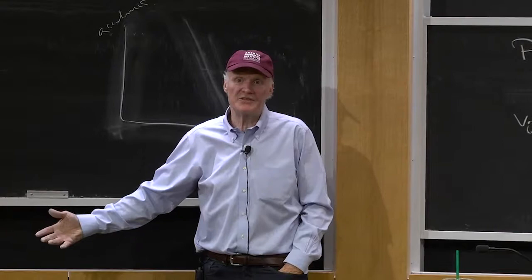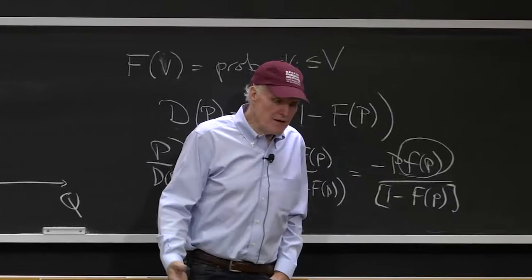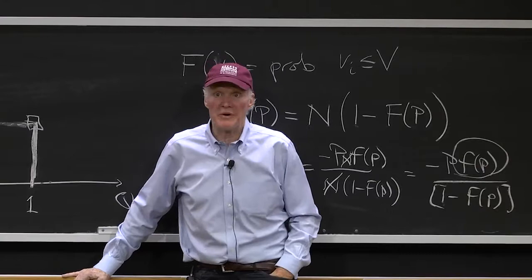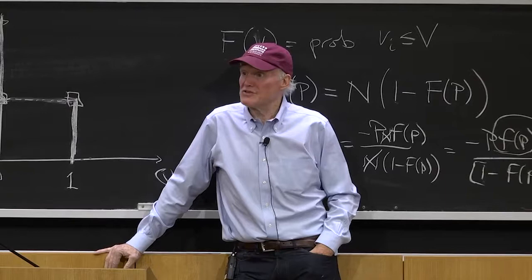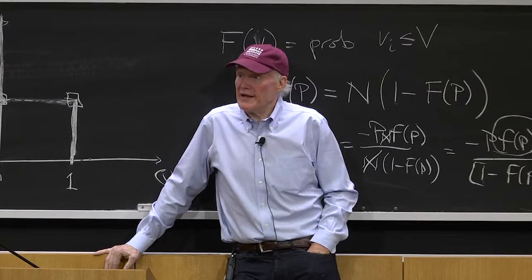So what happens is goods get cheap enough that they become something that the middle class wants and then the consumption rises very quickly. So that might be a good model for something like household appliances or things like that where you might say it's not so much bandwagon related or network effect related.